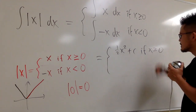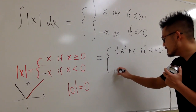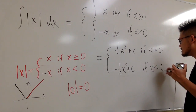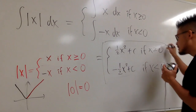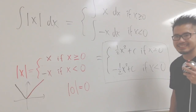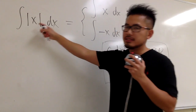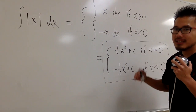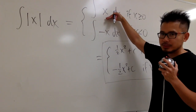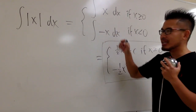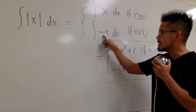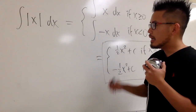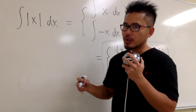The antiderivative of x is one-half x squared plus C when x is greater than or equal to zero, and negative one-half x squared plus C when x is less than zero. That's how to do it. Notice that if you know how to integrate the first piece, you can integrate the second piece as well, because it's just the negative version of the first. So it's not that exciting to do it twice.